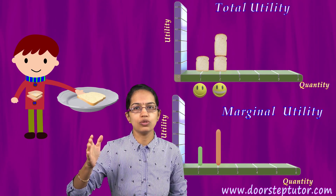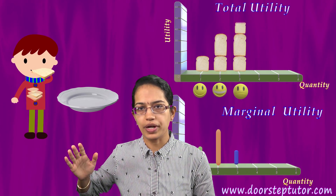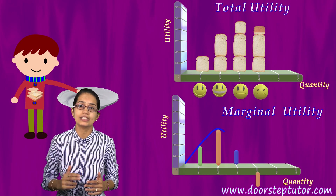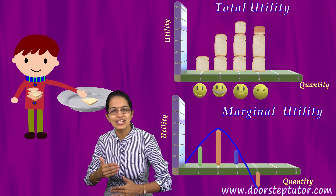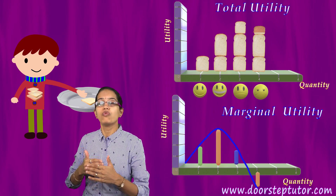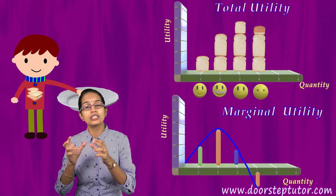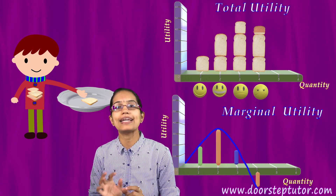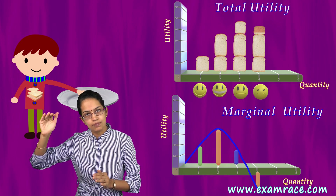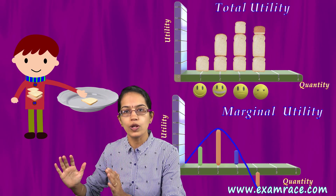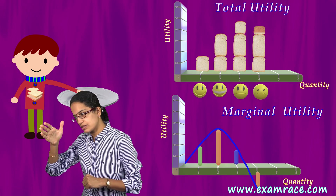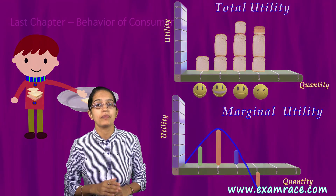But as soon as he consumes another slice of bread, his marginal utility would start to decrease because his speed to eat would decrease. Consequently, his marginal utility would decrease because the desire and satisfaction obtained from an extra slice of bread would decline after it has reached its peak — that is, the person is now full and does not want to consume more bread. Then his marginal utility starts to decline.